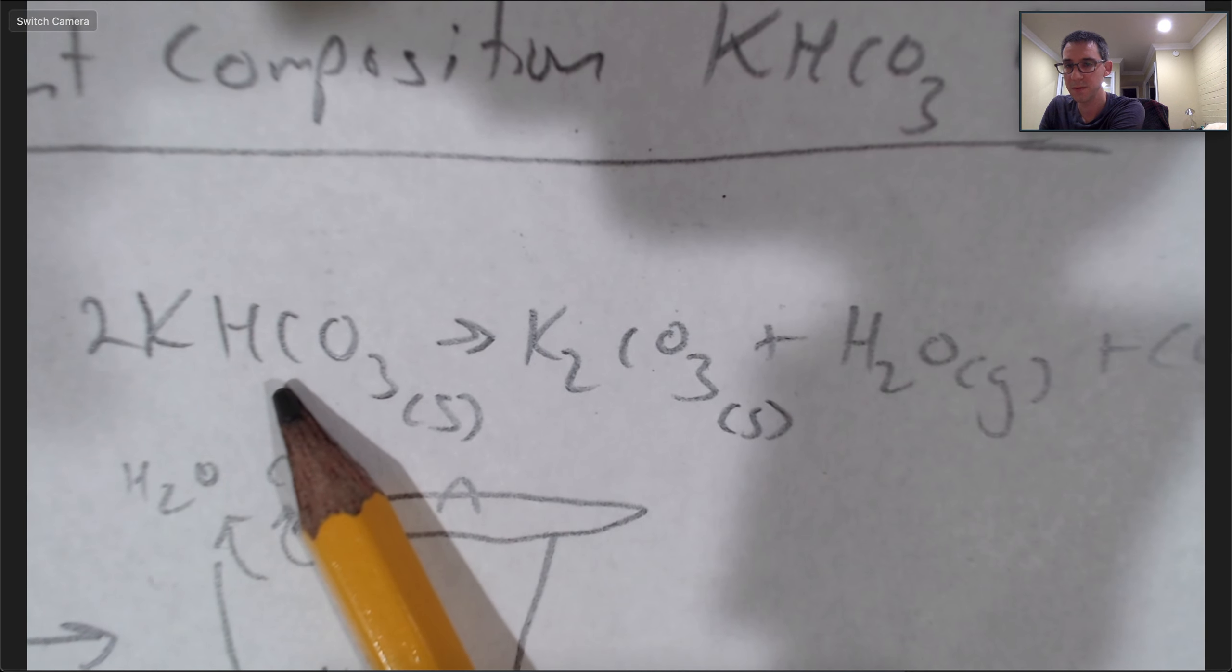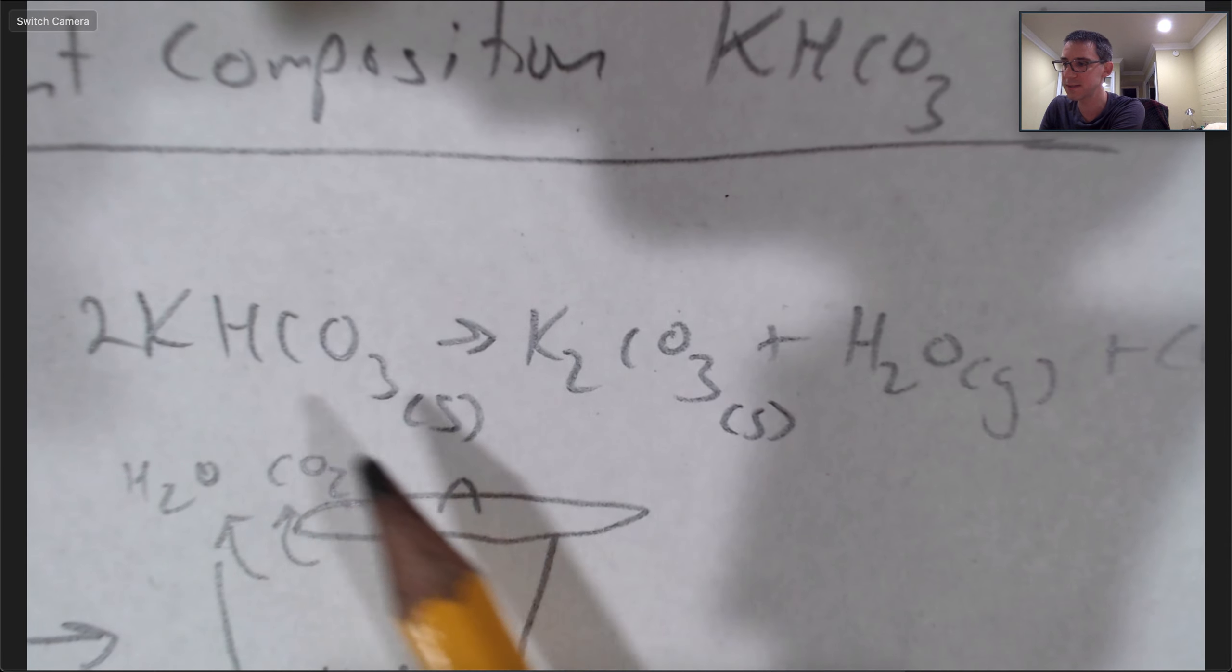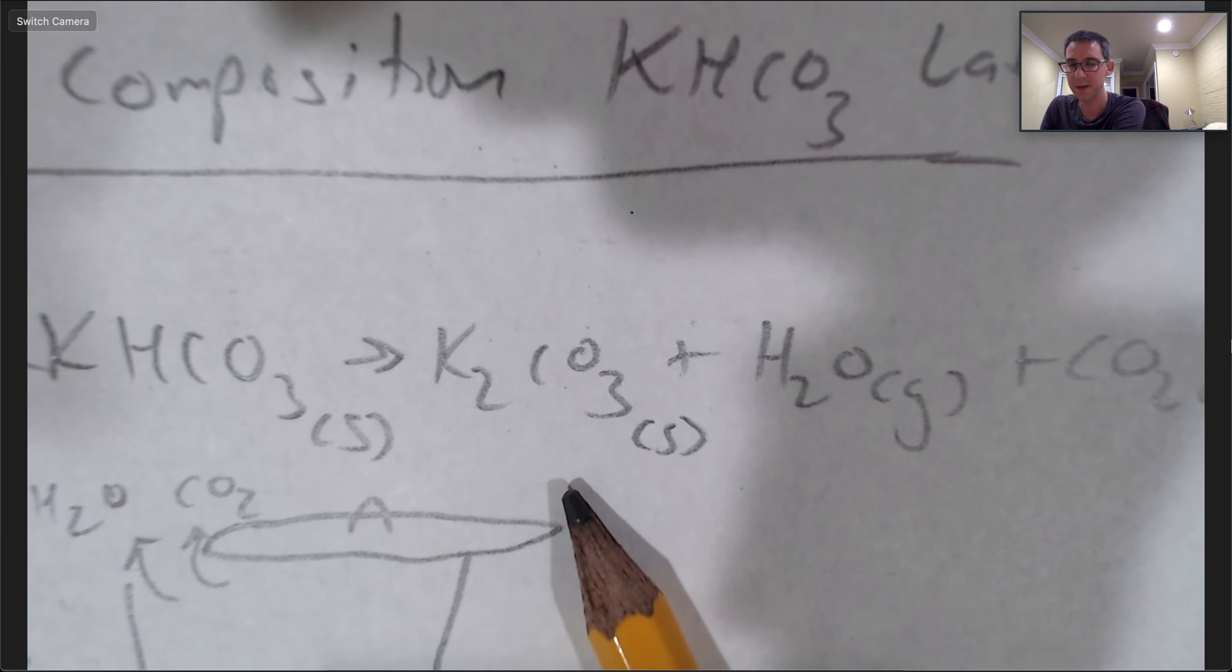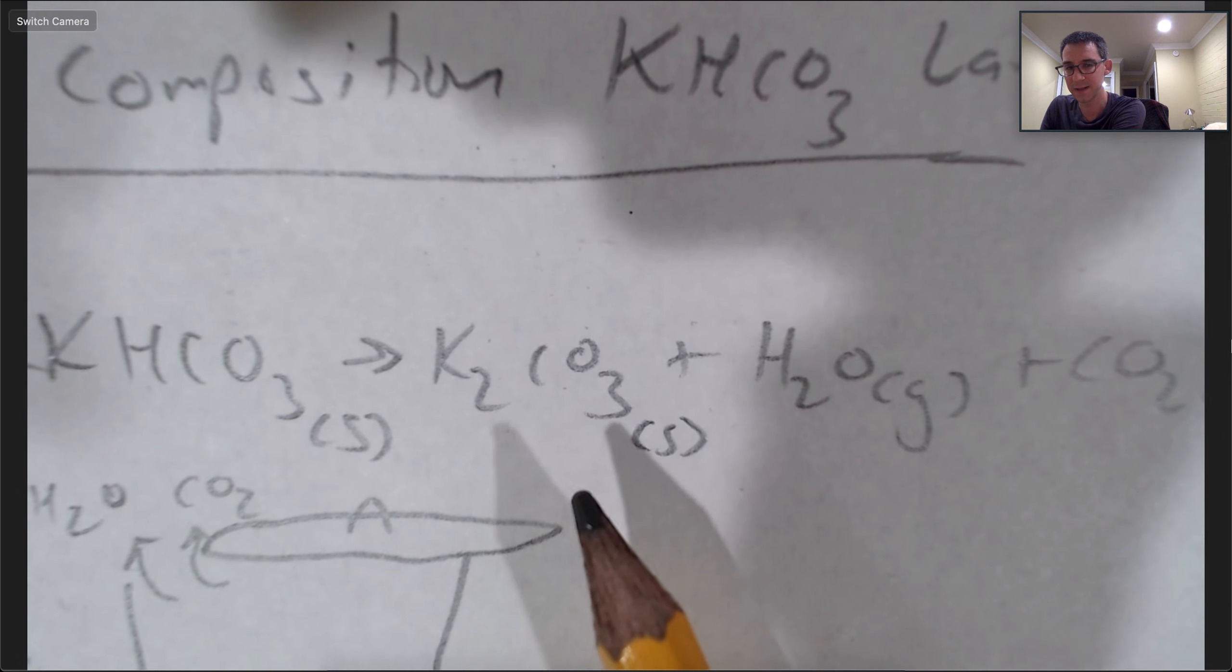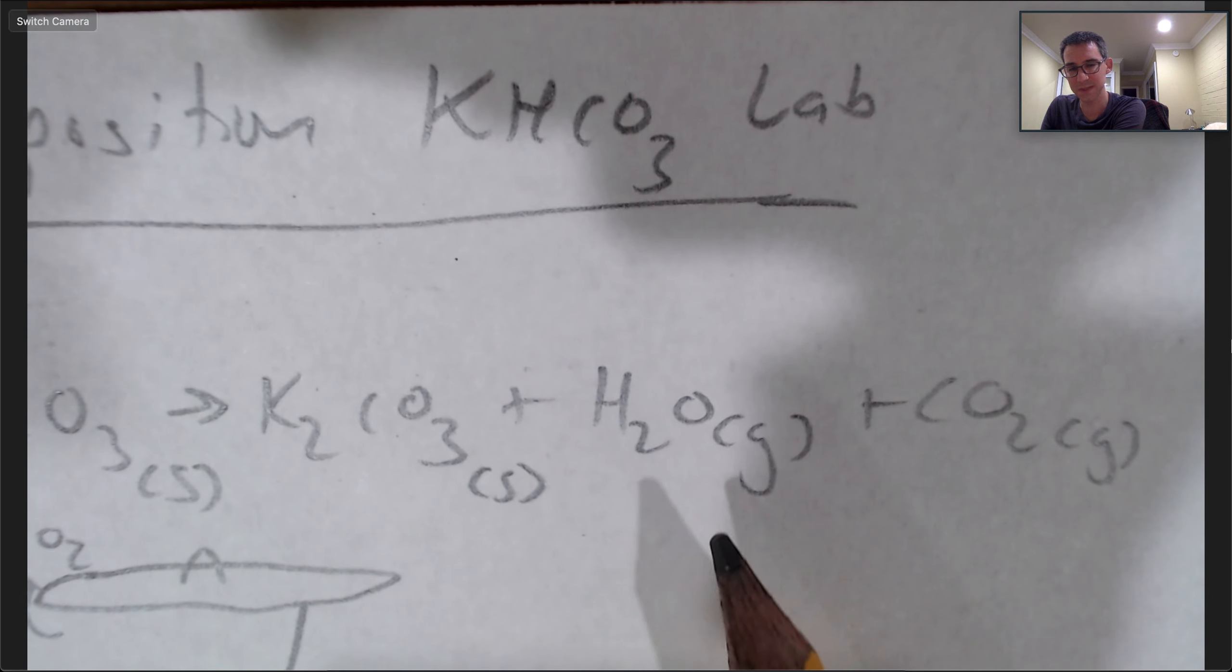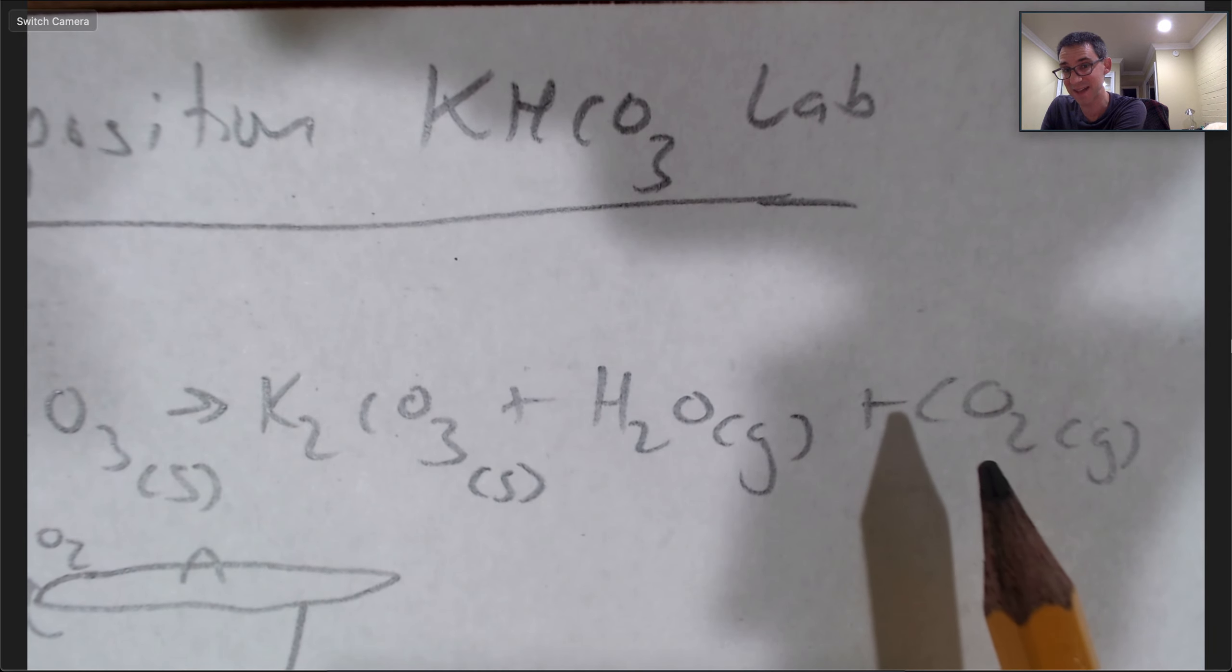So two potassium hydrogen carbonate formula units decompose to form one potassium carbonate formula unit. Both of those are solid, but also during the decomposition water and CO2 are released as gas.